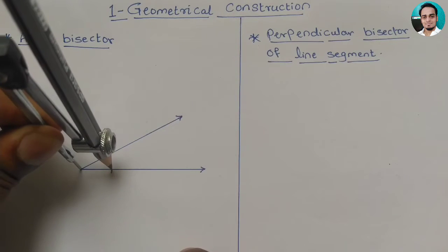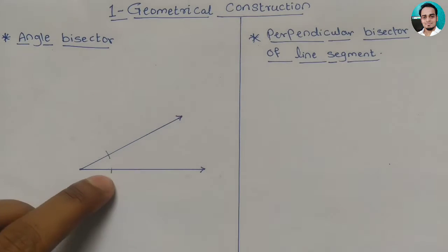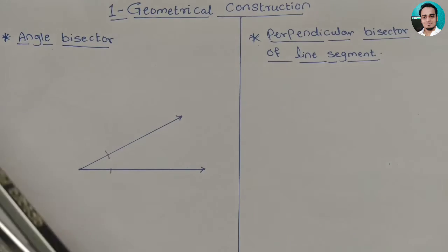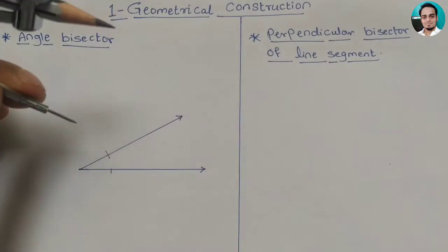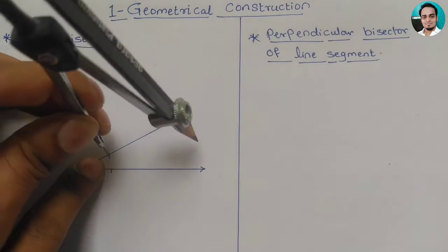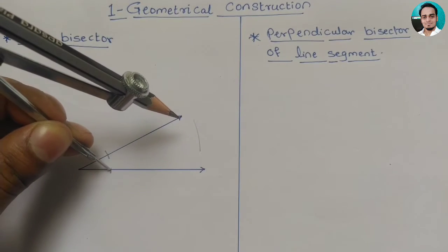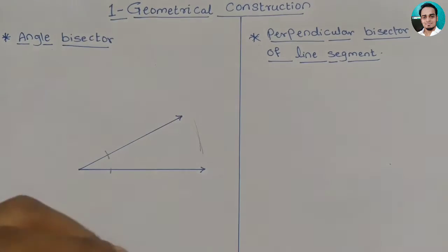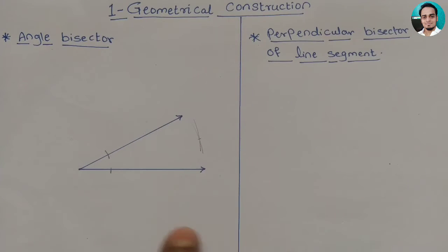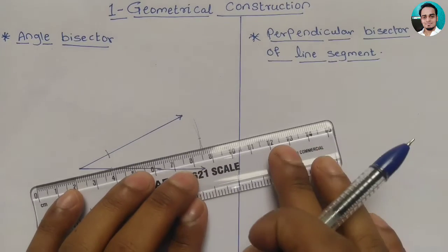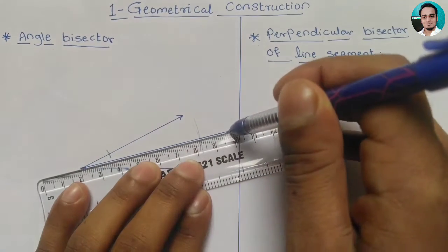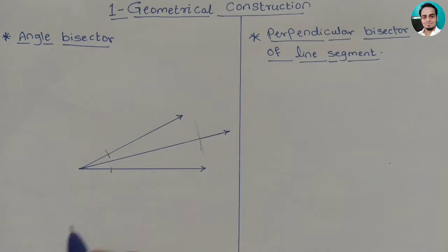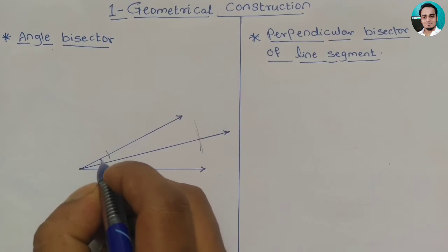We make an arc, which gives us two points. Then we increase the distance and keep that constant. We keep the compass point on each of those two points and make arcs. Where those arcs intersect, we join that point to the vertex. That line will be our angle bisector. These two angles will be equal — this is the angle bisector.